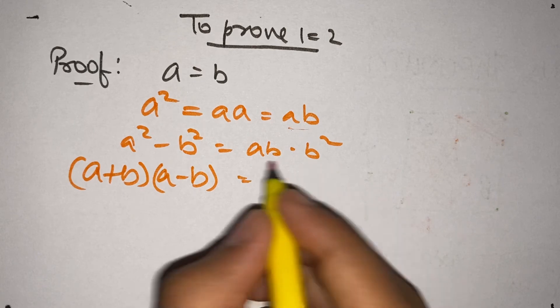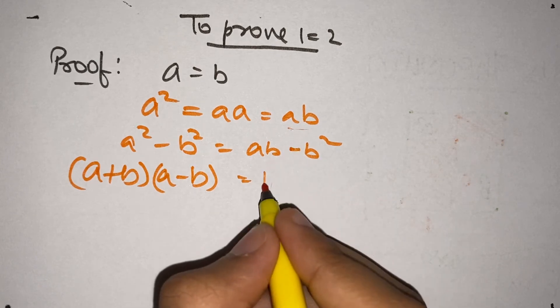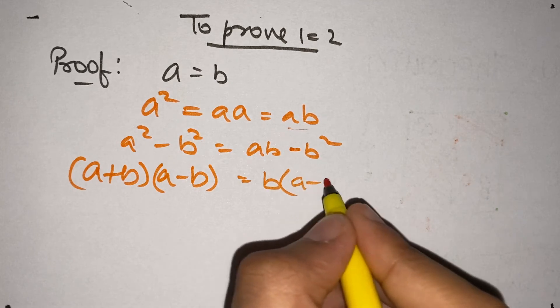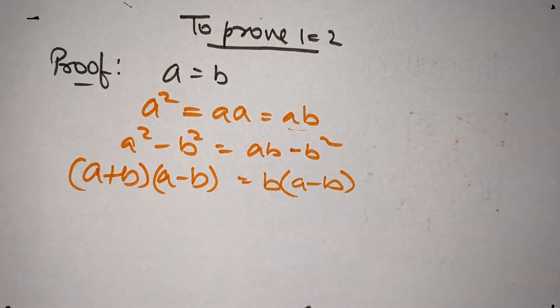Can we find something common out of here? Yes, we can put B common. So, B comes out. We are left with A minus B on the inside.